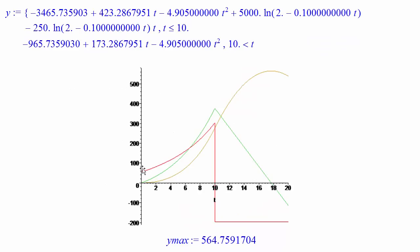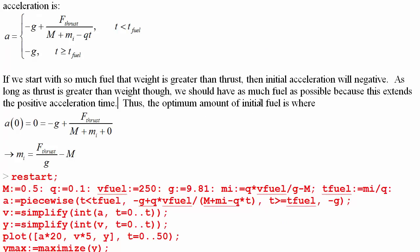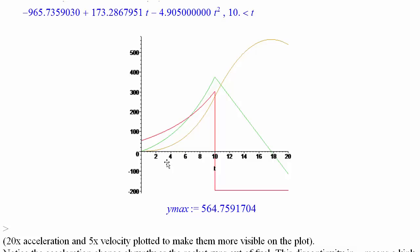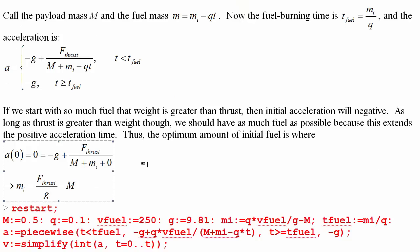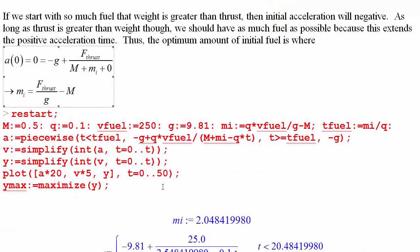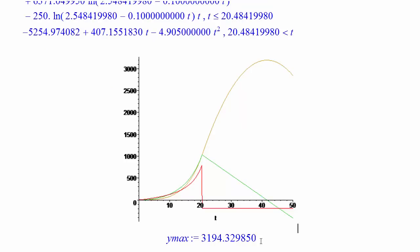As long as thrust is greater than weight, you should carry as much fuel as possible, since this extends the positive acceleration time. Starting heavier results in an acceleration that starts lower but gives more time to positively accelerate and build velocity. The optimum amount of initial fuel is where the initial acceleration is exactly zero — this gives the maximum achievable height, though it may not be the most economical choice. Substituting in, you get a plot showing a maximum height of about 3200 meters.